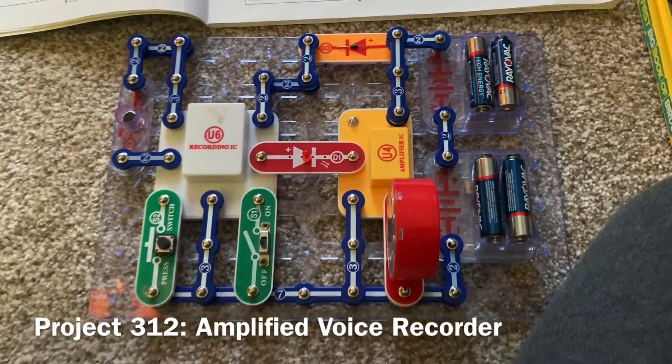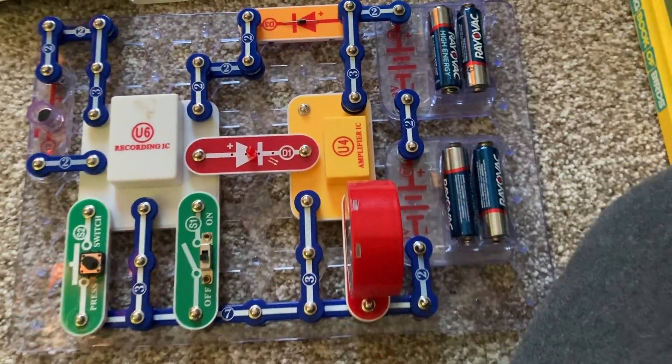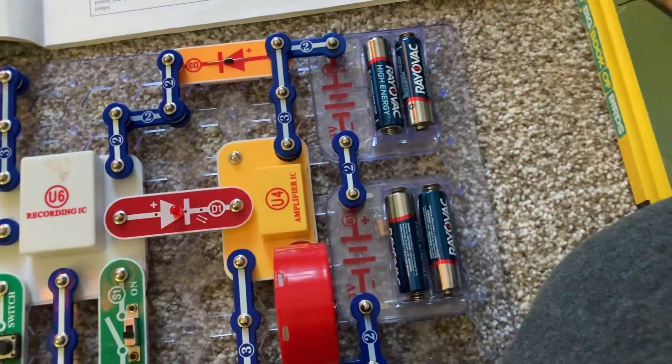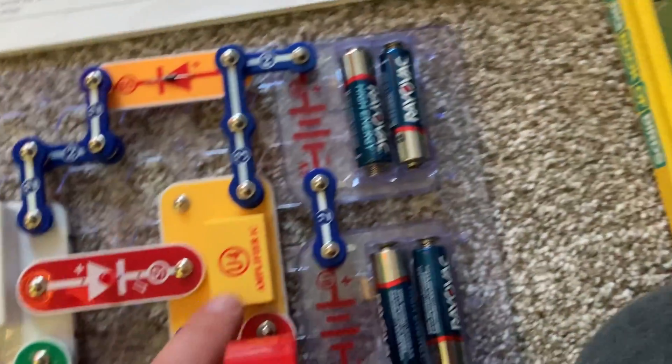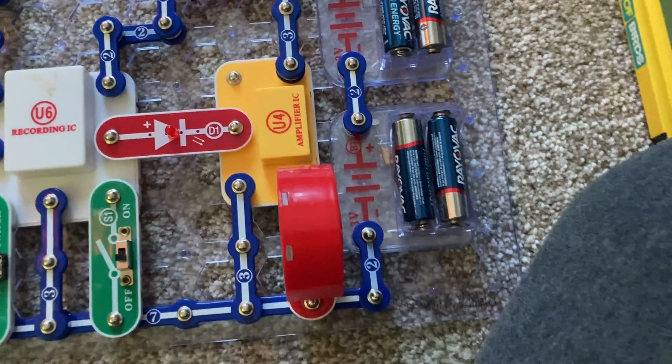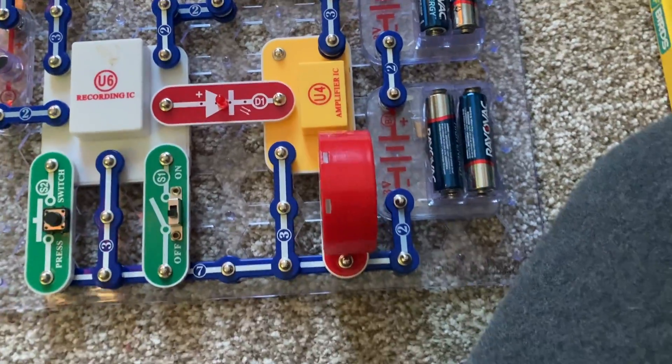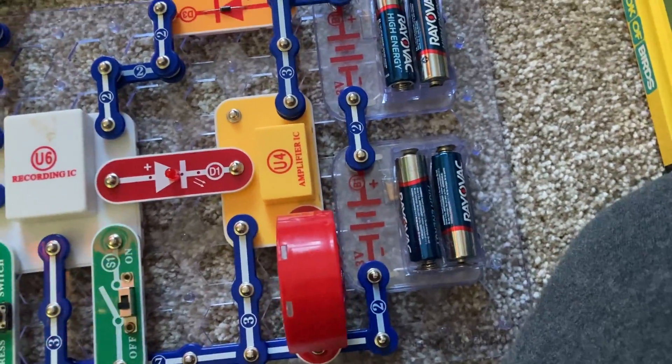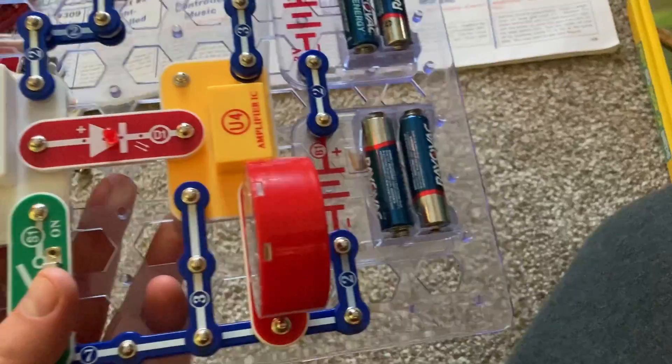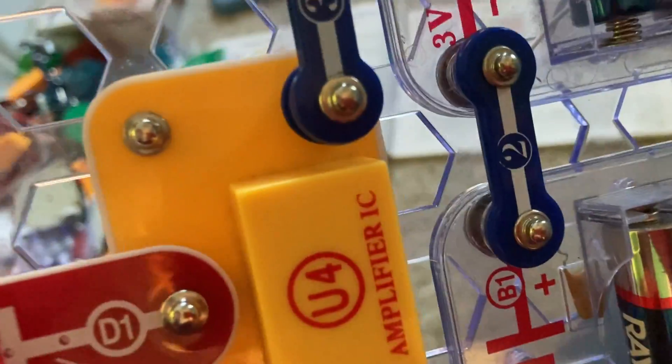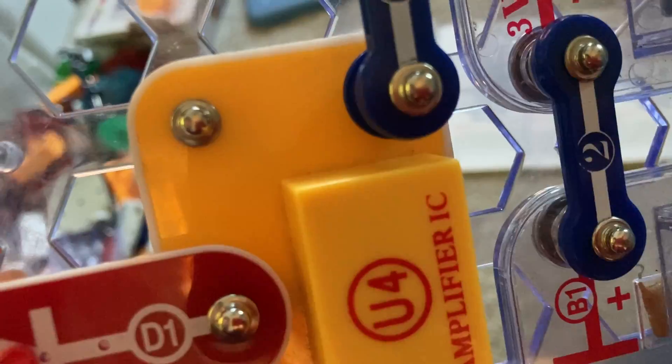This is an amplified voice recorder. Unlike the one in project 308 where the sound was quieter, it's going to be louder here because you have the U4 amplifier integrated circuit to strengthen the sound. So, I'm going to record something and play it back. Would you like to go out to the movies with me tonight?